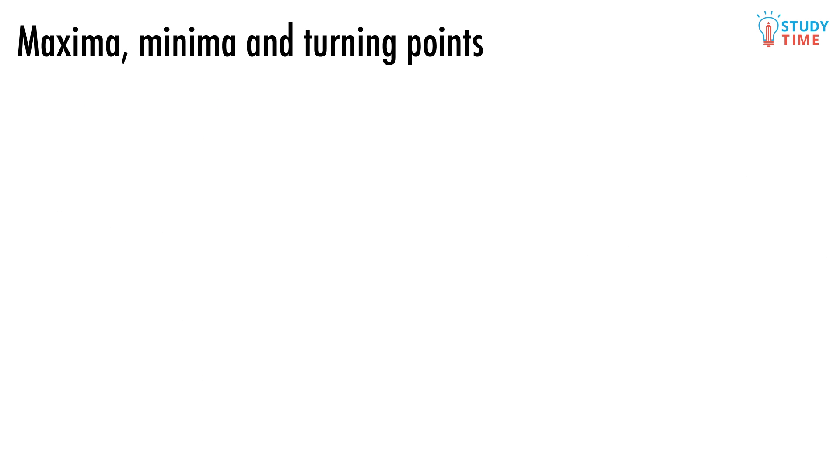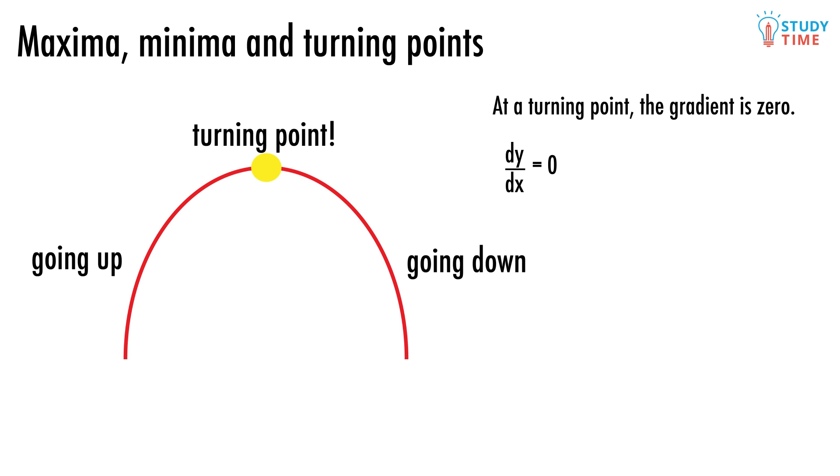Every curved graph has turning points. A turning point can be either a maximum or a minimum. A maximum is what we see when the graph stops going up and starts going down like this. Something very special happens at these points. The gradient is zero.